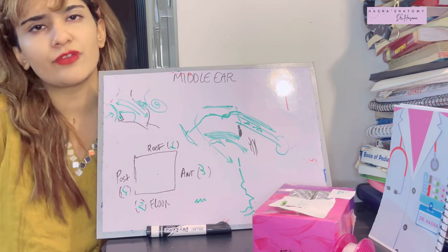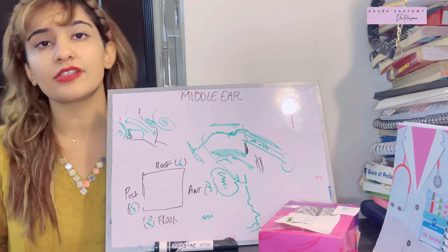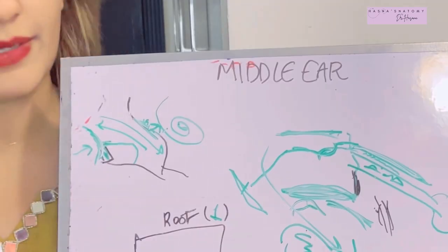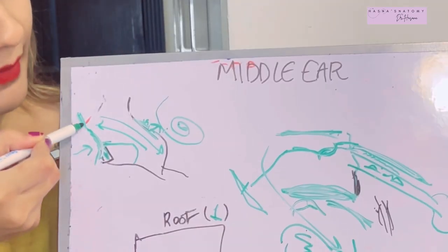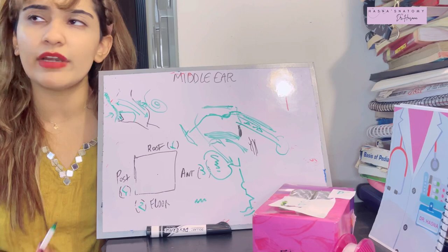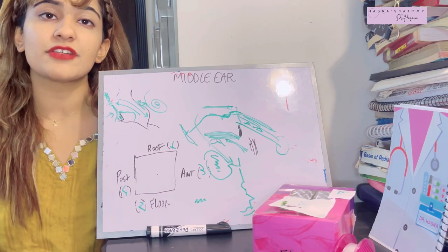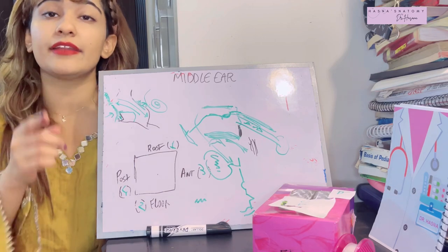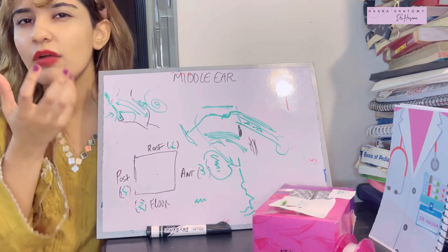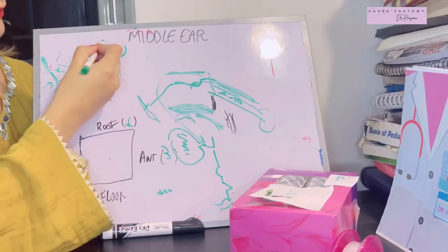The lateral wall is the tympanic membrane, plus the squamous part of the temporal bone just above it. The anterior canaliculus is also found in the lateral wall — this is why the chorda tympani passes through it, entering behind the pars flaccida. The chorda tympani passes through the lateral wall because the anterior canaliculus lies there.